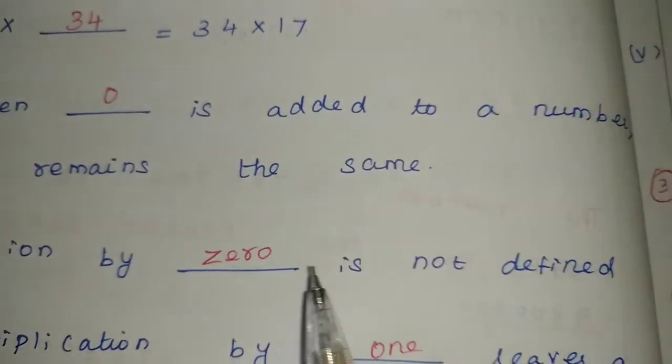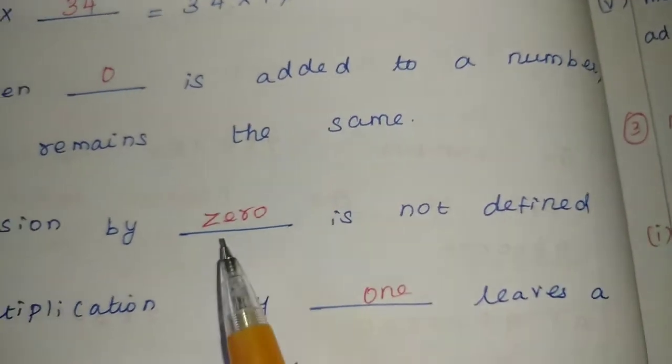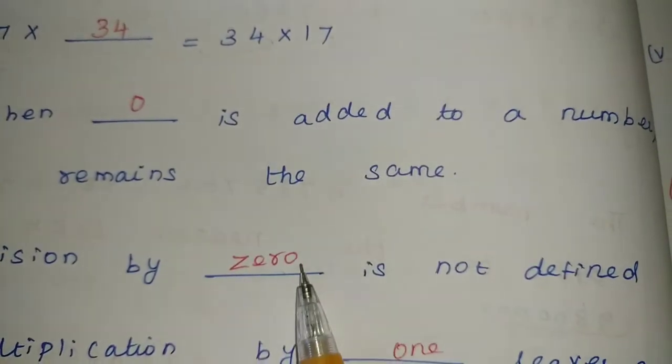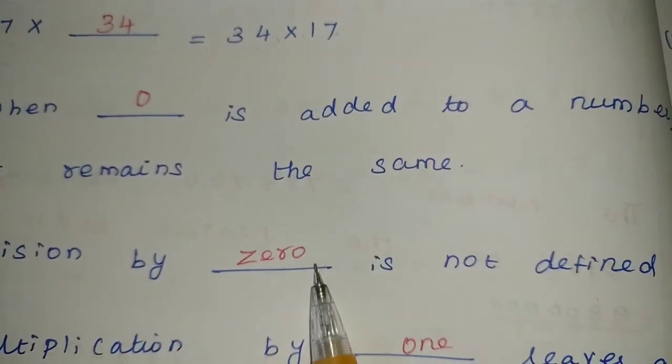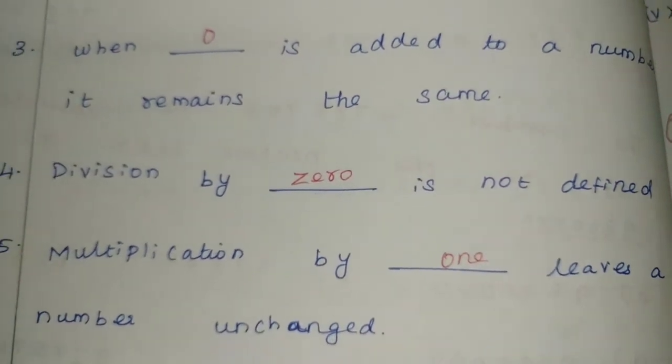Clear? Next, division by blank is not defined. Not defined means, we do division. By 0 we divide. So, when we divide any value by which value, what will come? Not defined will come.